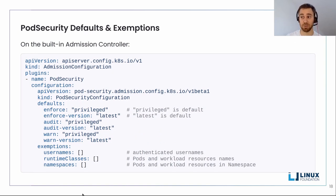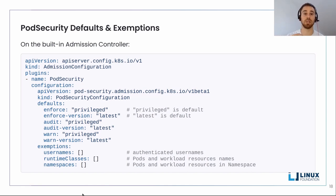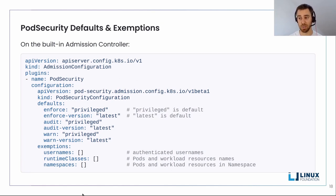How do we set defaults for pod security? We configure the admission controller. We can set the default to privileged, which is the least restrictive and the default. We also have exemptions — we can exempt usernames, resource names, namespaces, and so on. One thing to keep in mind: most pods are created by a controller in response to creating a workload resource. A user creates a deployment and then pods are created by the Kubernetes reconciler, so those will not be exempt. Some fields like .metadata or .spec.tolerations are ignored. And don't try to exempt controller service accounts like kube-system, because then everything breaks.